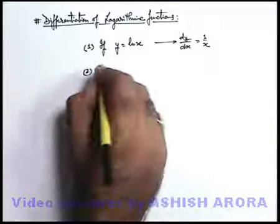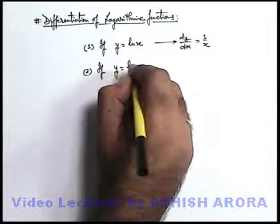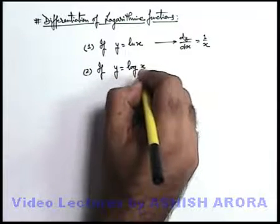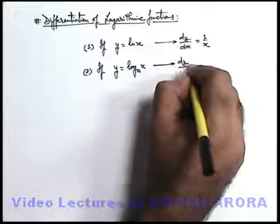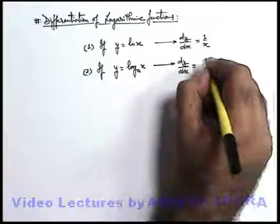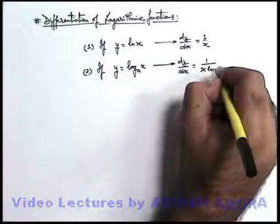If it is not natural log, the second relation is, say you are given with y equals log of x to the base a. It can be directly differentiated and the result can be given as 1 upon x ln a.